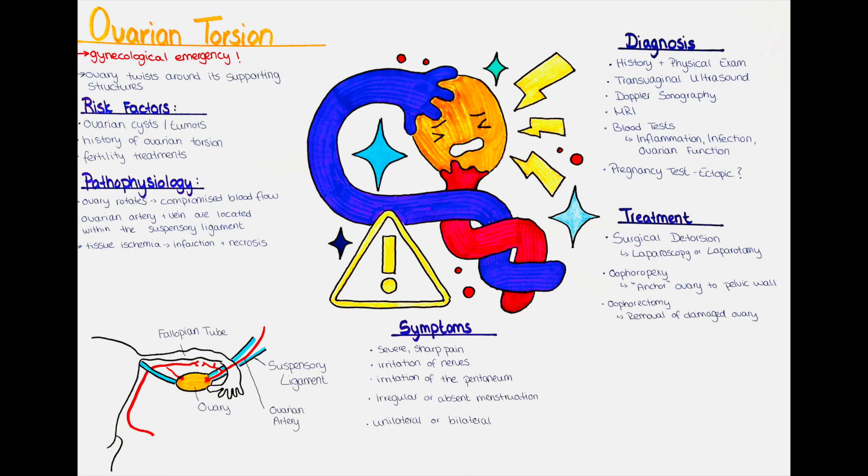Ovarian torsion is a gynecological emergency in which the ovary twists around its supporting structures resulting in compromised blood flow to the ovary. This can lead to severe pain and if left untreated can result in irreparable damage to the ovary.